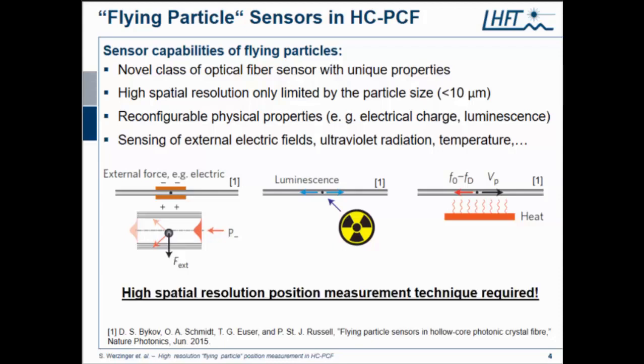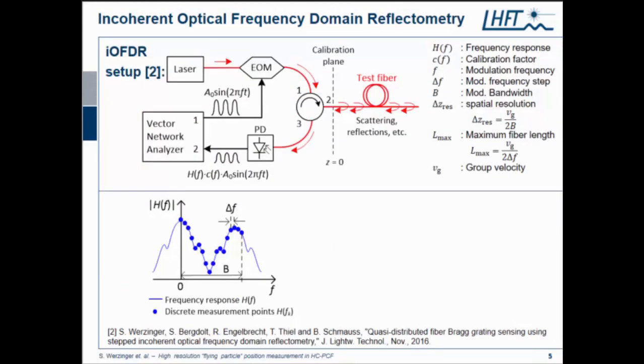This is where we used our reflectometry setup and combined this with the setup at the Max Planck group. First, I want to introduce the principle. This is basically a frequency domain representation of a time domain OTDR reflectometry setup, but it operates in frequency domain. We have an incoherent light source, could be a line-broadened laser or spontaneous emission source, and we use an electrical network analyzer to modulate a sinusoidal stimulus onto the wave, which is just an amplitude modulation. Then we send it into a test fiber and use direct detection of the modulated light. As this is a linear system, we will get a response at the same frequency but with different amplitude and phase.